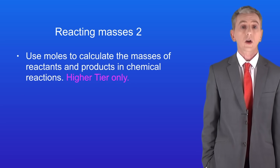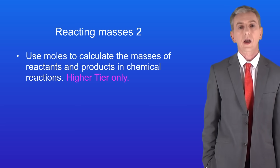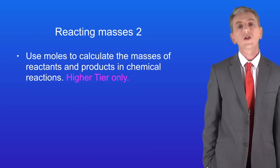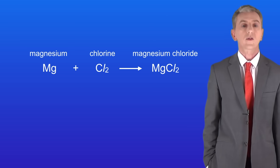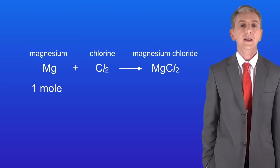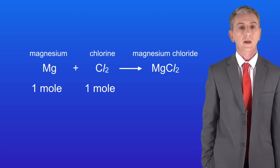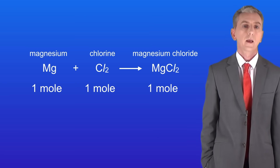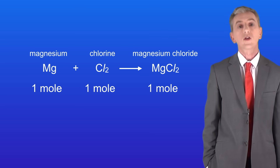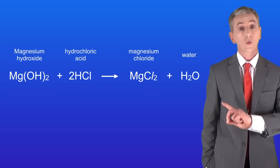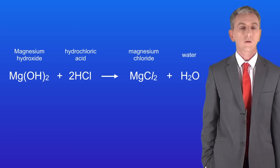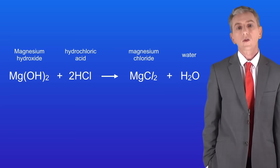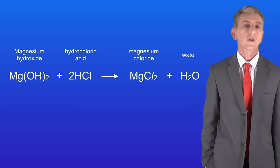In the last video we started looking at calculating reacting masses and we saw equations such as this one. We saw that this tells us that one mole of magnesium plus one mole of chlorine makes one mole of magnesium chloride. In this video we're going to look at equations such as this one, where you can see that we've got a large 2 in front of the hydrochloric acid. So how do we deal with numbers such as these?